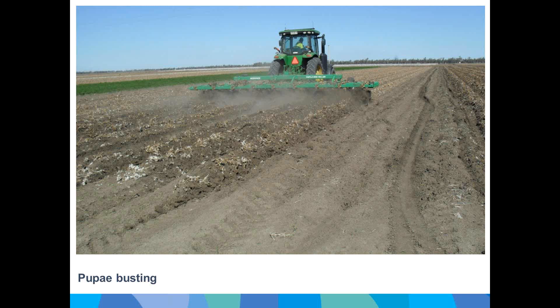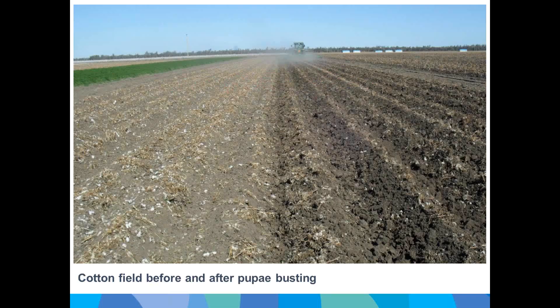Pupae busting is used to expose and kill any helicoverpa pupae that survived the BT toxins — a pest resistance management strategy for BT cotton — and disturbs the top 10 centimetres of soil. However, the new Bollgard 3 varieties give growers relaxation from pupae busting if they defoliate before 31st March, giving them the option of minimising tillage operations.